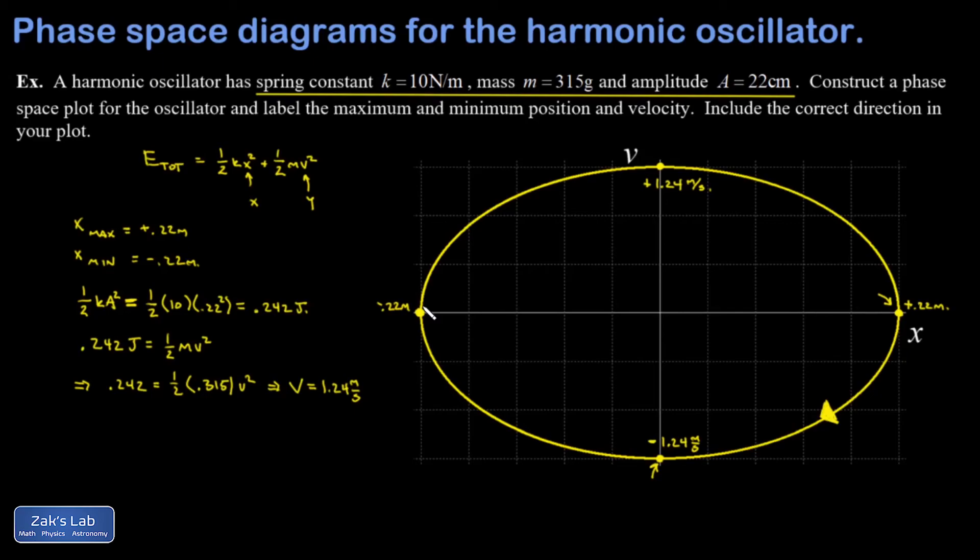It should then go to even more negative x values until it gets to the maximum negative x value. This is where the spring is going to be fully compressed and ready to shoot the mass back to the right. At that maximum negative value of x, the spring is going to push in the positive direction and accelerate the mass to the right, which is positive velocities. That's what I see happening next as I go clockwise on this phase-space plot.